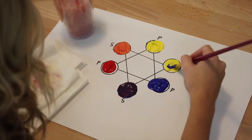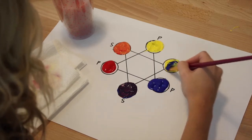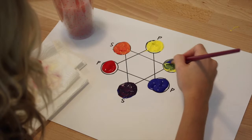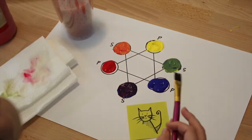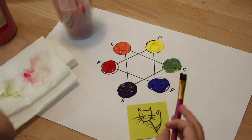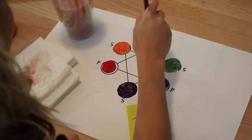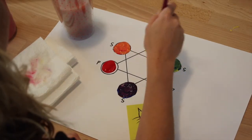When we mix yellow and blue, two primary colors, we will get the secondary color green. Here you can see we have our color wheel with three primary colors and three secondary colors that we mixed from our primary.